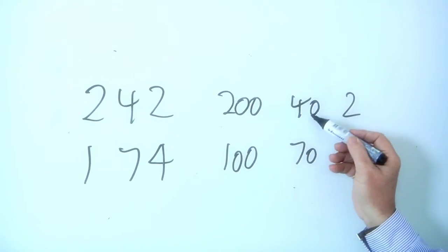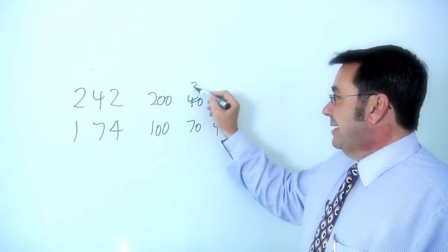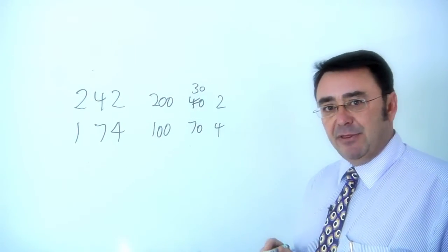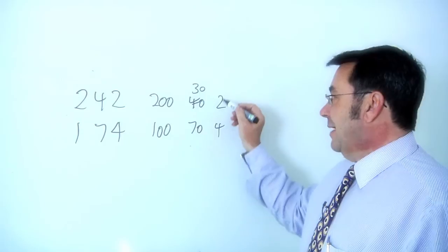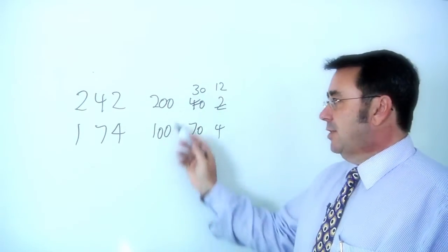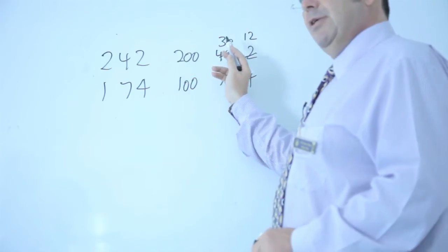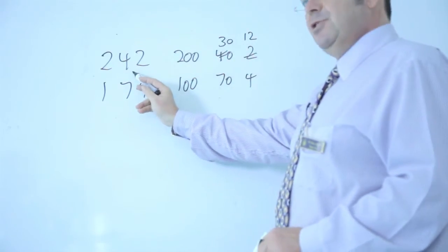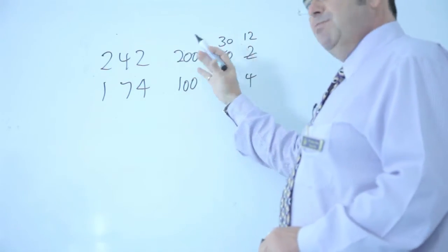So the 40 here, I will take 10 from there to make that 30. Take the 10 and add that to my units column. So that becomes 12. So the number is still 200, 30 and 12 to make 242, but I've just moved the numbers around.